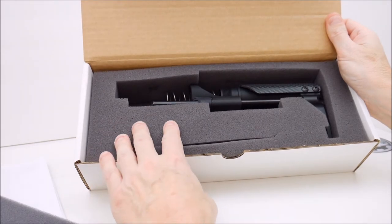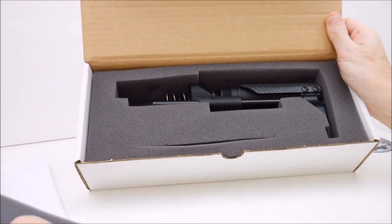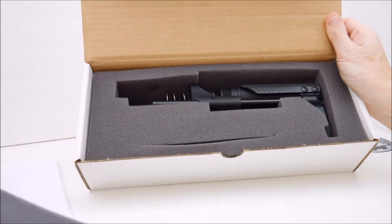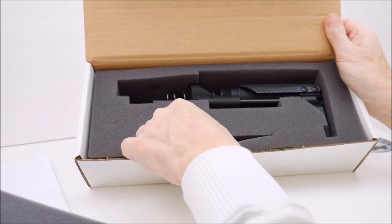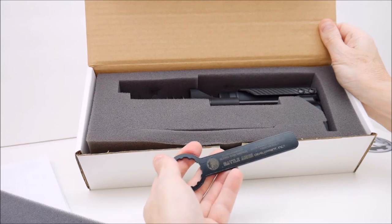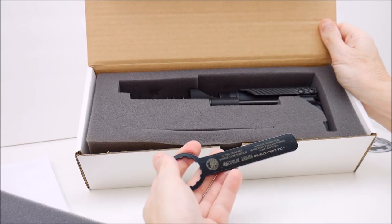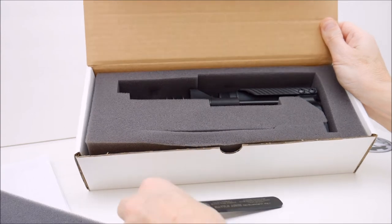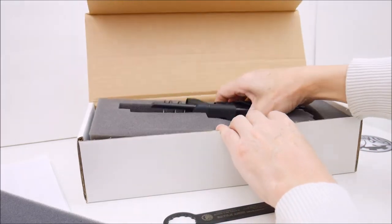We've got foam on the bottom, foam surrounding the stock, foam on the top. The cutout in the front is for the proprietary tool. So 24 pounds max hand tighten and then the stock system box out of the way.